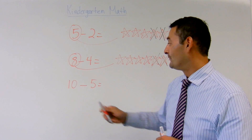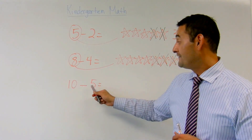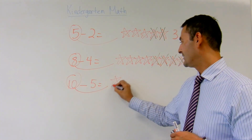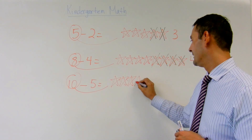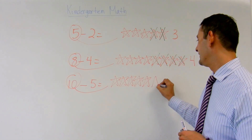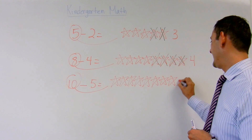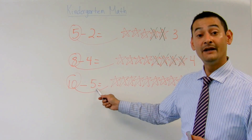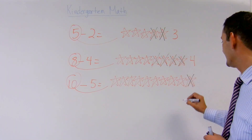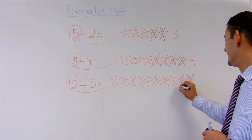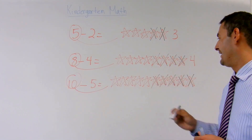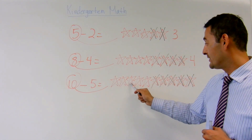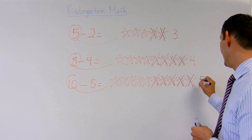Now let's take a look at this last example. Ten take away five equals — I'm going to go ahead and grab my number, move it over here, draw ten stars: one, two, three, four, five, six, seven, eight, nine, and ten. And I'm going to take away five — one, two, three, four, and five. How many do I have left? Ten take away five equals one, two, three, four, five — and the answer is five.